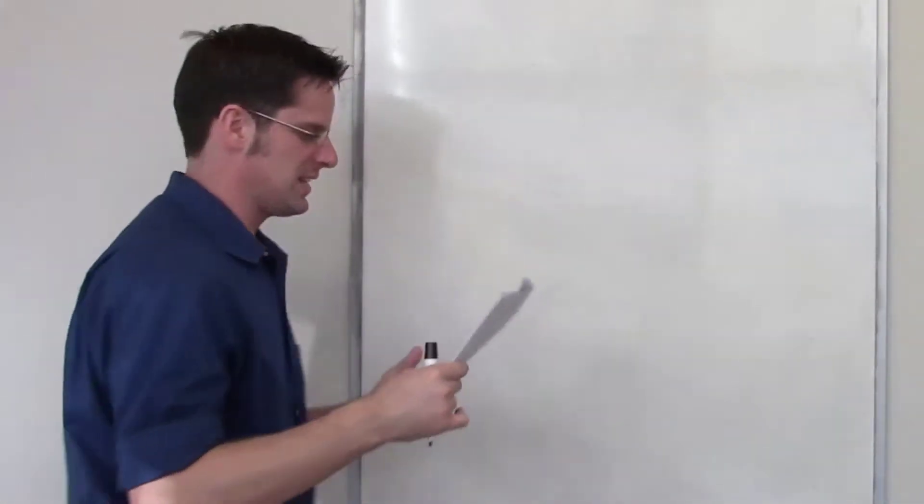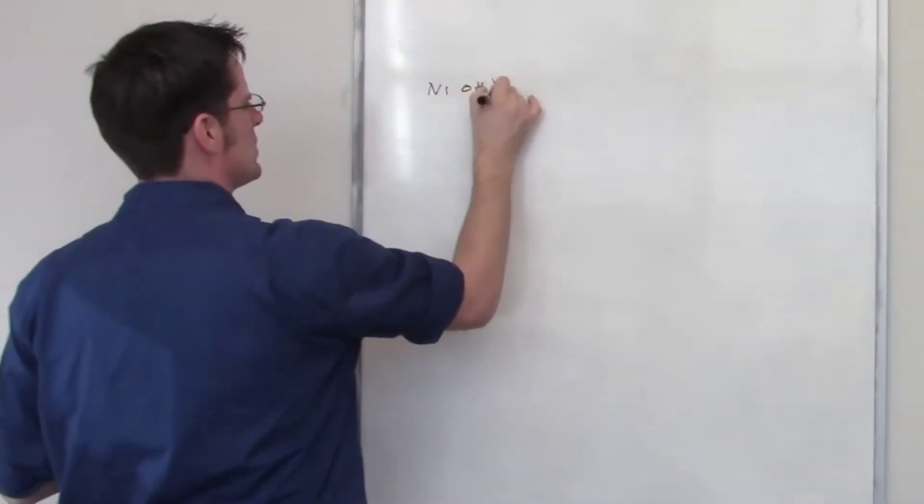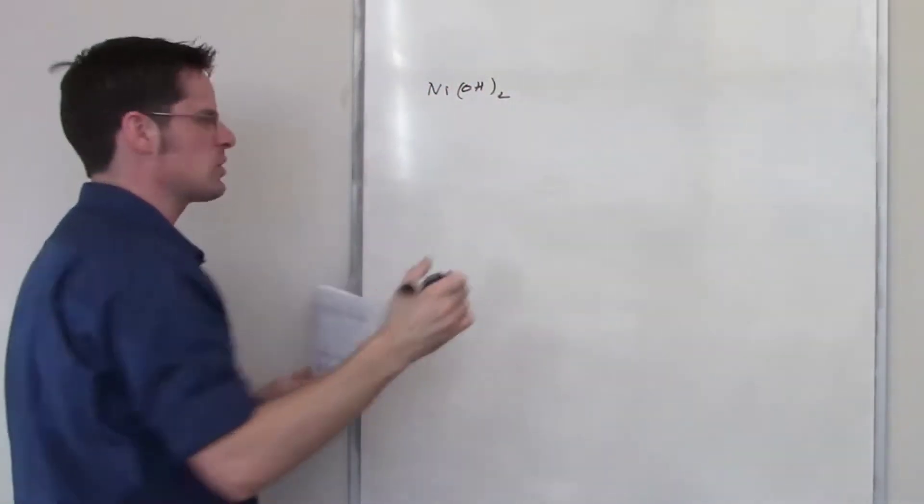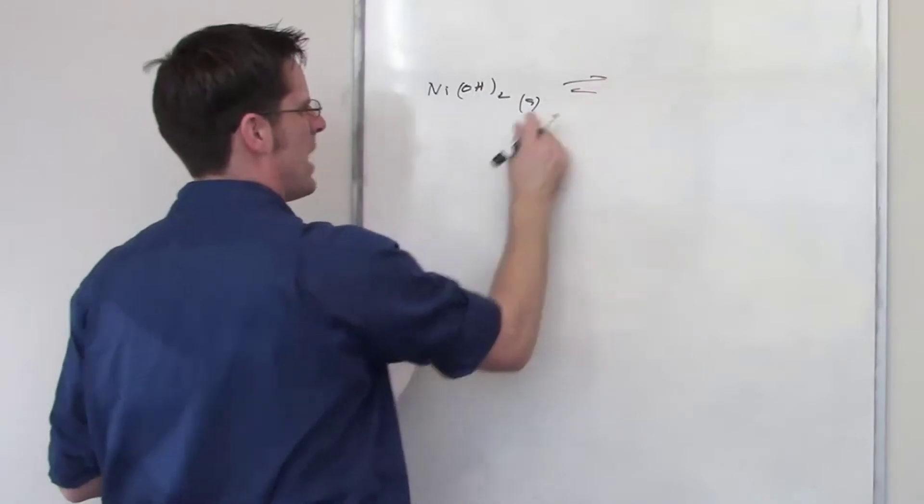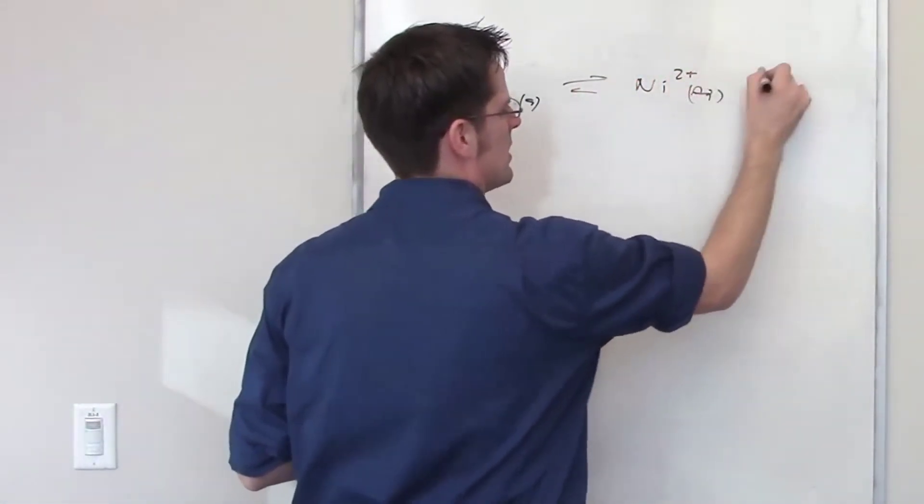Here's a problem that's very much like the last one. I've got nickel hydroxide. It's of course going to dissociate. It's not a very strong electrolyte, which means it's going to have a two-way arrow. It's going to dissociate to form nickel 2 plus and hydroxide minus.